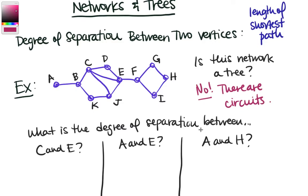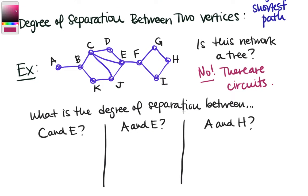Now we want to find the degree of separation between several pairs of vertices. First, the degree of separation between C and E. There are several paths we can find between C and E — we can go down and around, or over the top — but the shortest one is just the single edge connecting the two, and the length of a path with one edge is just one. So they have degree of separation one.